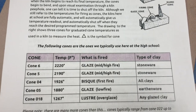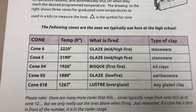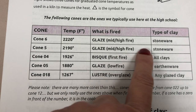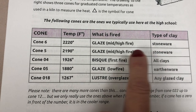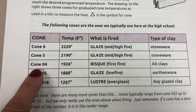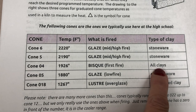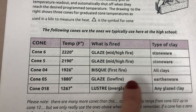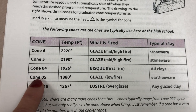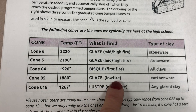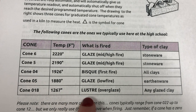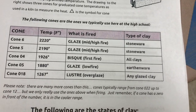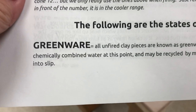Here is a small chart of the most commonly fired cones we use at the high school. Starting with the hottest: cone 6 and cone 5, with temperatures above 2100 and 2200 degrees, are used only for our mid-fire stoneware glazes. Cone 04 is where all clays bisque fire — I fire all clay bodies, whether earthenware or stoneware, to cone 04. Cone 05 at 1880 degrees is for low-fire earthenware glaze only. And cone 018 is a specialty cone used as a luster overglaze.